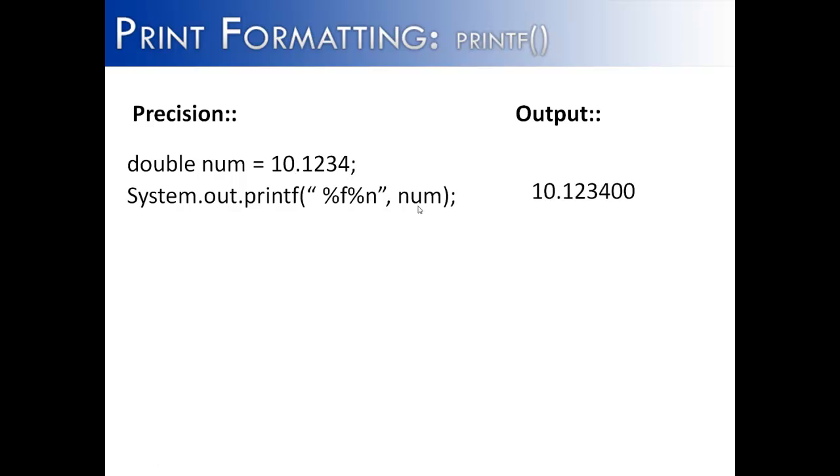So when that prints out, it does not print out 10.1234. It prints out 10.1234 with two zeros at the end. The reason for this is that when no precision is given, %f will default to six decimal places. So that's why you have the four decimal places here and then two trailing zeros, because no precision is specified.